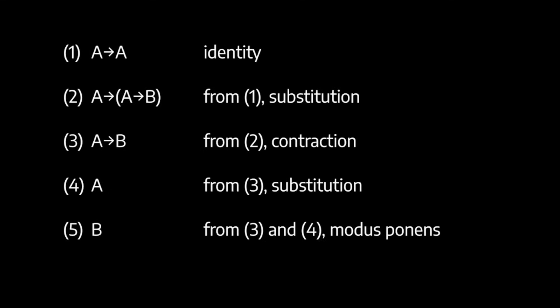Here is the full argument. We begin with: if A then A. Then we have: if A then if A then B — substituting the conditional itself for the name in step one. From that we derive if A then B by contraction. Then we substitute A for if A then B to get A. Then we derive B by modus ponens. That is the argument. If we take the Curry sentence 'if this sentence is true then God exists' and plug it into this argument, we've derived the conclusion that God exists — and of course you can derive any arbitrary conclusion you like.